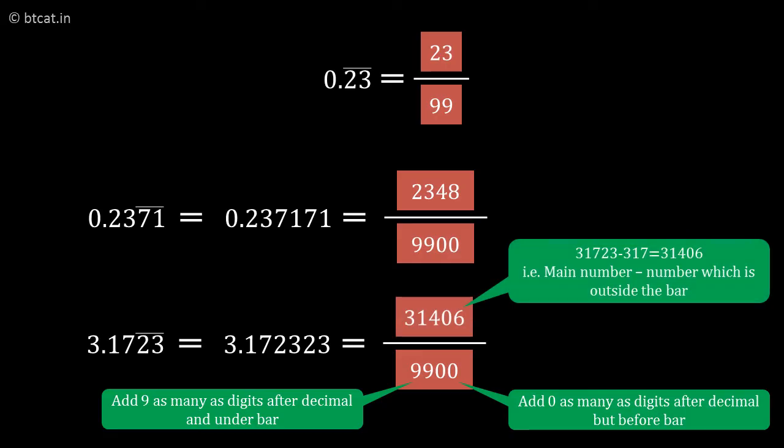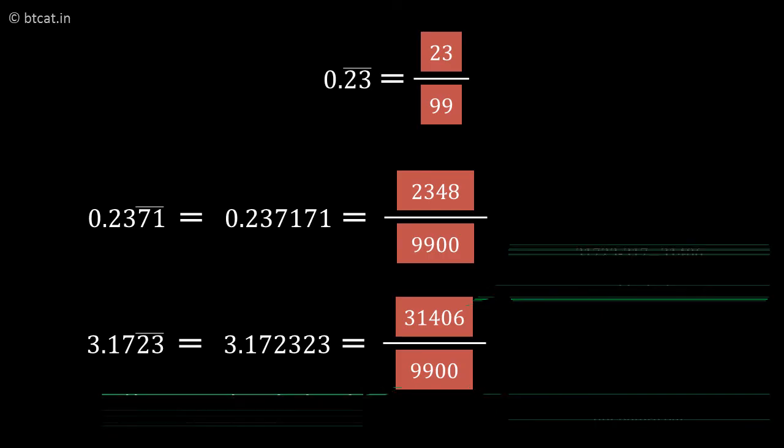For the numerator, we write the full number 31723 minus the number outside the bar, which is 317. So the final answer is (31723 - 317)/9900.